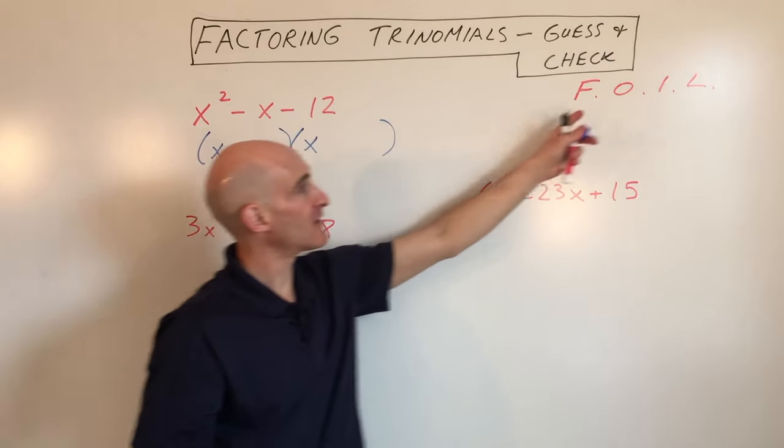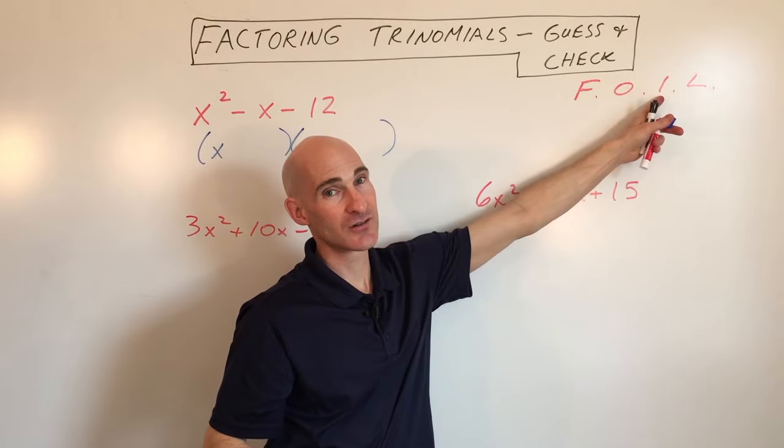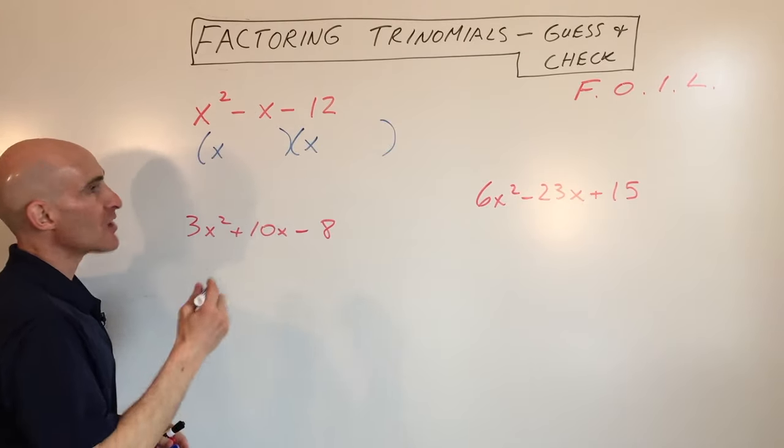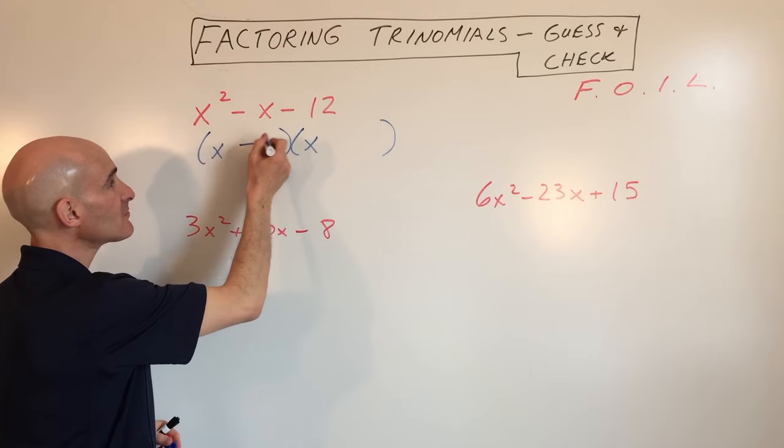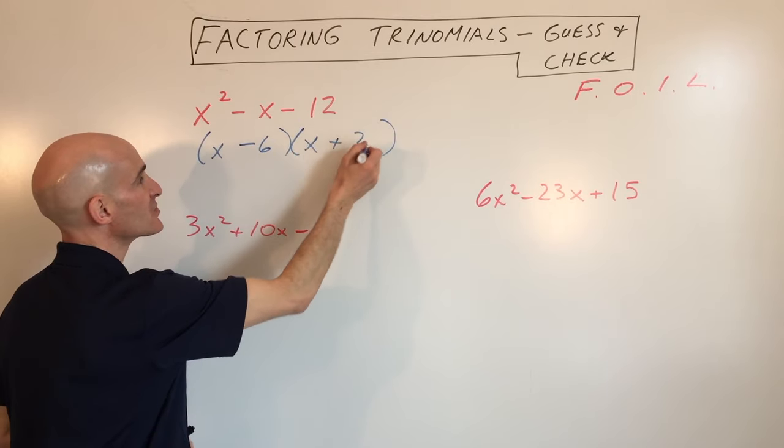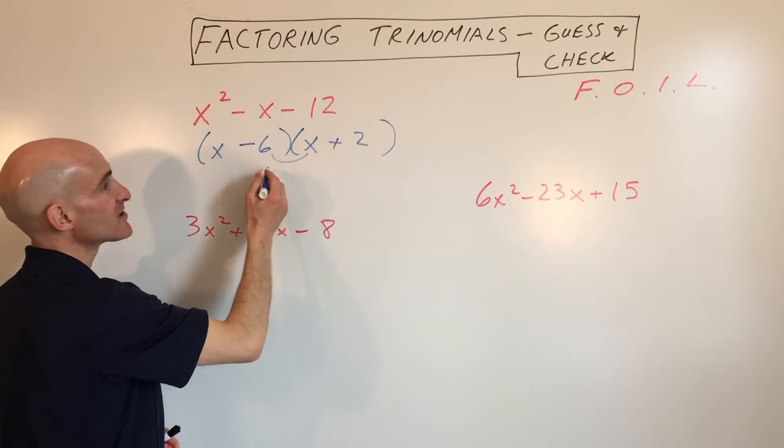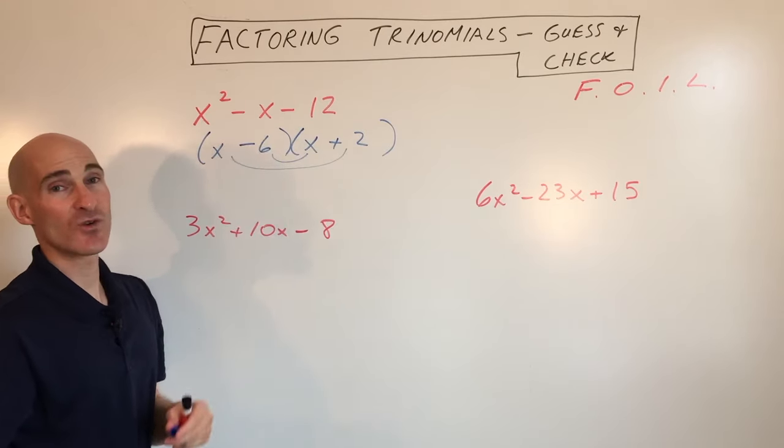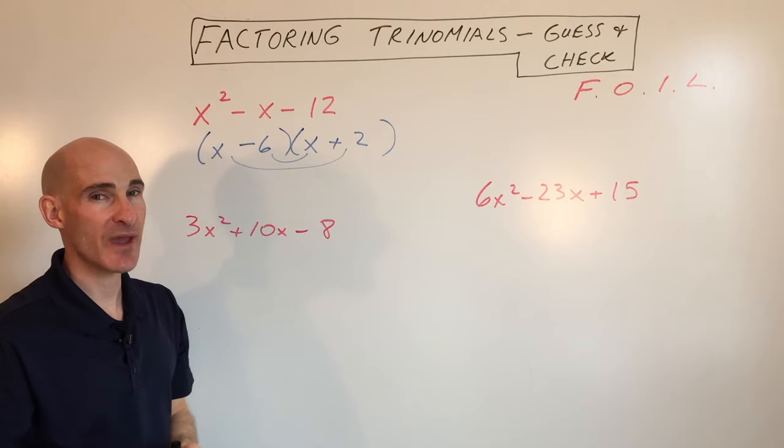But what I'm checking now is that the outer and the inner terms add up to negative x, the middle term. So I'll just show you some examples. Say it's minus 6 and plus 2. That gives you negative 6x and positive 2x. That's negative 4x. We want to get negative 1x, so we'll see how it doesn't match.